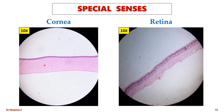Here are the two slides from special senses. Cornea can be identified by regularly arranged collagen fibers covered by stratified squamous non-keratinized epithelium. Retina can be identified by the presence of 10 layers with nuclear layers and a single cellular ganglion cell layer.